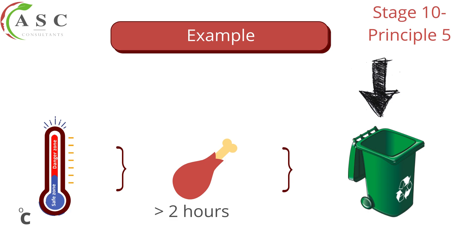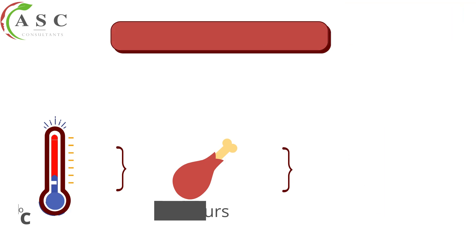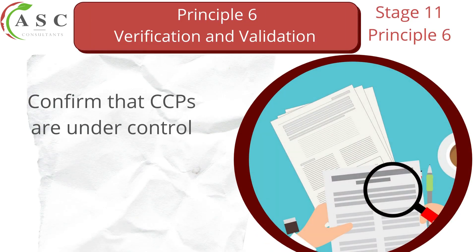Now let's move to principle number six, which is stage 11 — verification and validation. Verification means checking whether a process is still working according to the accepted standard operating procedure. Validation means confirming whether it can work on your product in your facility.